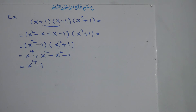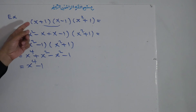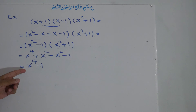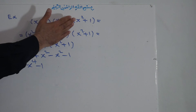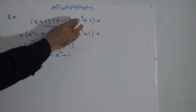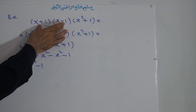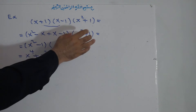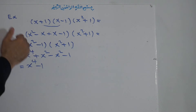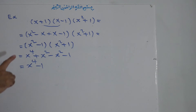It means that if you multiply these three polynomials or binomials, the result is x to the power of 4 minus one. It can be 4 polynomials or 5 polynomials — what we do is multiply two by two, and at the end we reach two polynomials, and then we multiply those two polynomials and get the result.